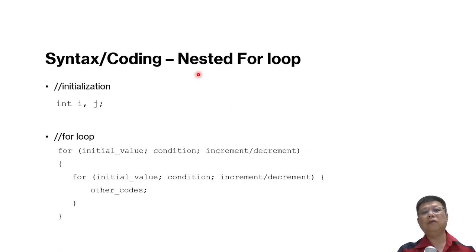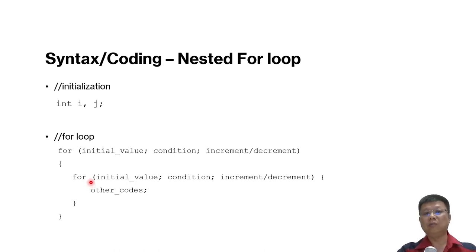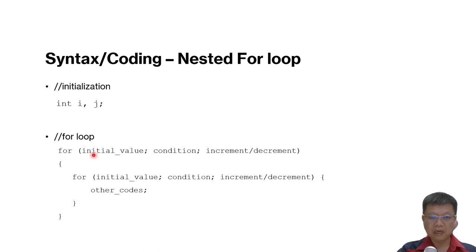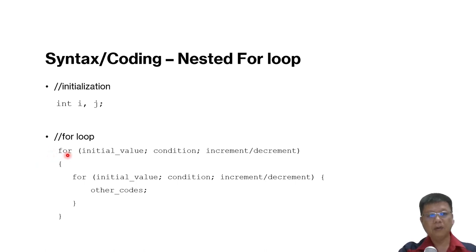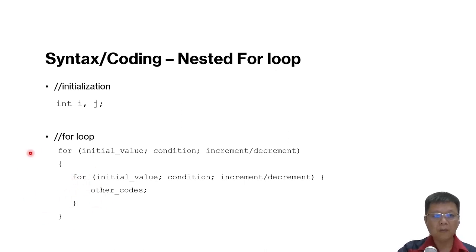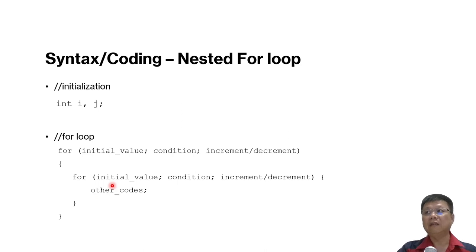Next, we look at the nested for loop. A nested for loop means that in some cases we have more than one for loop — a for loop inside another for loop, possibly 2 or 3 layers deep, but the syntax is the same: initial value, condition, increment or decrement. The difference is it works through the first round of the outer loop, then completes all iterations of the inner loop, then returns to the outer loop and repeats the process.